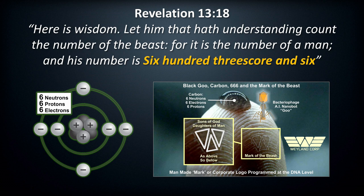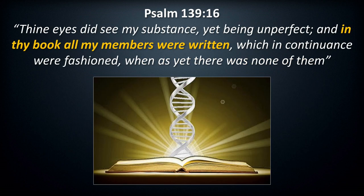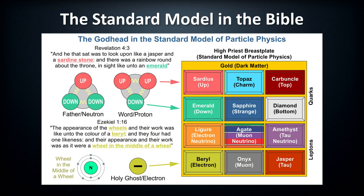Revelation 13:18: 'Here is wisdom. Let him that hath understanding count the number of the beast, for it is the number of a man, and his number is six hundred threescore and six.' Carbon in the Bible absolutely corresponds to the mark of the beast — we are all carbon-based life forms, and the mark is transhumanism. Once one takes the mark, their God-given book of life — their DNA — will be rewritten and become property of the beast system. Scripture calls this the unpardonable sin, the blasphemy of the Holy Ghost electron cloud that electrifies our bodies. The newly augmented DNA will transform one's fingerprints and facial recognition features — this is the mark of the hand and forehead. Psalm 139:16: 'In thy book all my members were written' — DNA is a book literally.